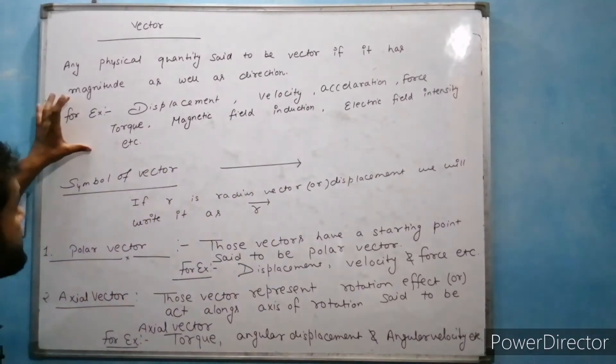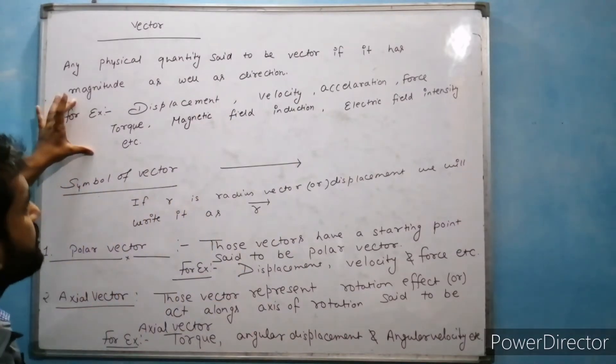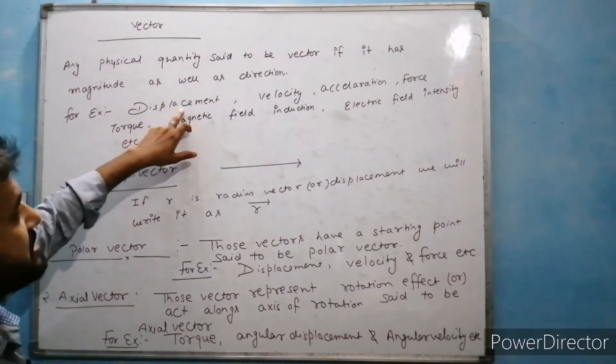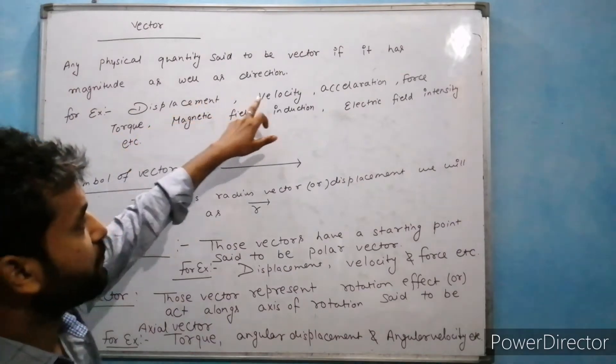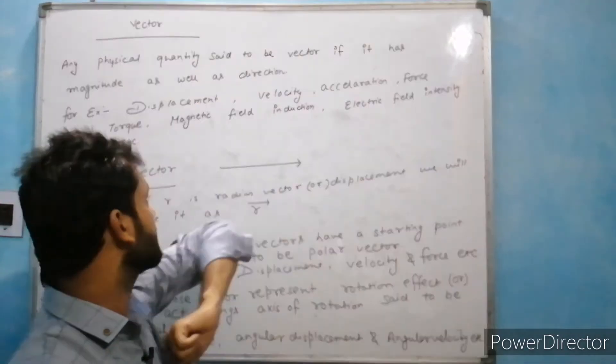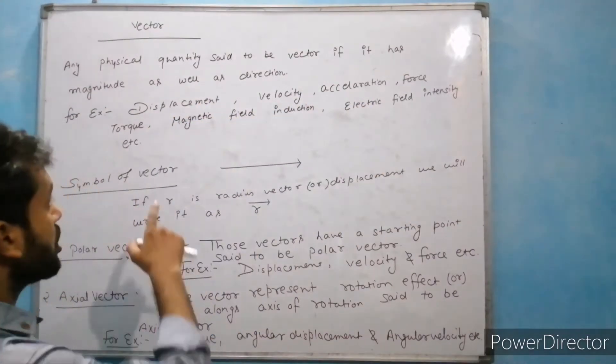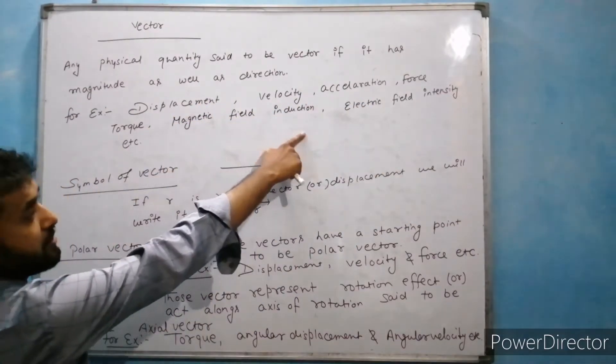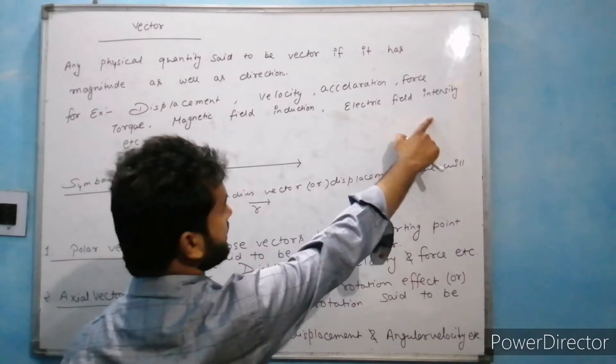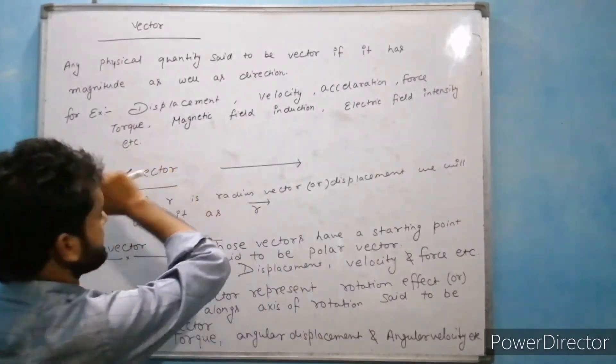There are some examples of vector quantities: displacement, velocity, acceleration, torque, magnetic field, electric field, etc.